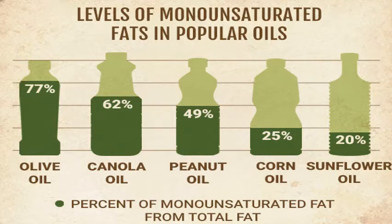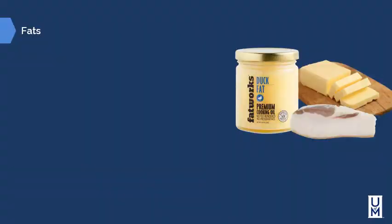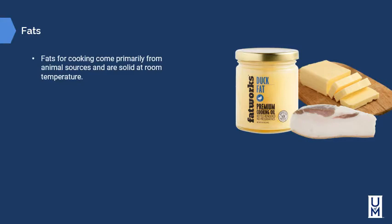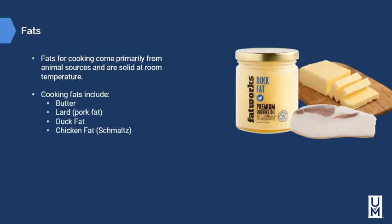A chart shows the level of monounsaturated fats in popular oils, from the high end of olive oil to the very low end of sunflower oil — basically showing that olive oil should be used sparingly, while sunflower oil is healthier and can be used more frequently. Fats for cooking come primarily from animal sources and are solid at room temperature. Cooking fats include butter, lard, duck fat, chicken fat called schmaltz, and shortening — though shortening is a vegetable product, it has similar properties to fats.